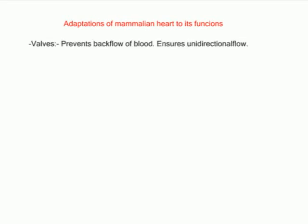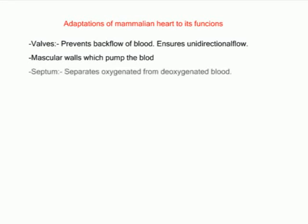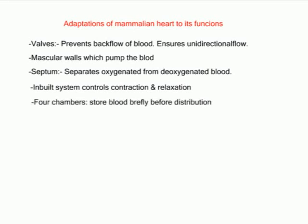The mammalian heart is adapted to its function in several ways. It has valves which allow blood to flow only in one direction and close to prevent backflow. It has muscular walls which contract to pump blood continuously. It has a septum separating oxygenated from deoxygenated blood, an inbuilt system controlling contraction and relaxation of muscles, four chambers which store blood briefly before pumping, and cardiac muscles that contract and relax continuously without fatigue.